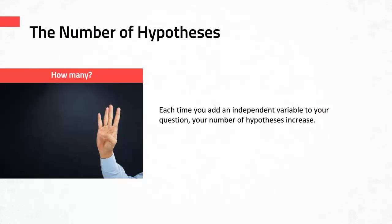Each time you add an independent variable to your question, your number of hypotheses increases. For example, if you have three independent variables and one dependent variable, you test seven null hypotheses: three main effect null hypotheses — one for each independent variable — three first-order interaction null hypotheses representing the interaction between two variables, and one second-order interaction null hypothesis representing the interaction between all three variables. So every time you increase the number of independent variables in a question, you increase the number of null hypotheses you need.